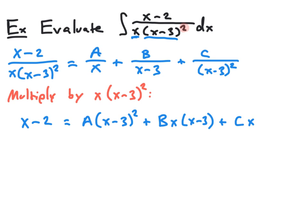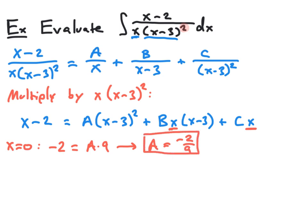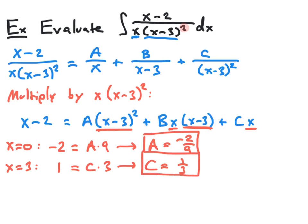We can now do some strategic substitution to solve for some of our variables. If we let x equal 0, on the left-hand side we get negative 2, and we get a times negative 3 squared, which is a times 9. The b and c terms both disappear since they're multiplied by x. So a equals negative 2 ninths. We can also let x equal 3. We get 3 minus 2, which is 1 on the left, and the a and b terms disappear due to the x minus 3 factors, leaving us with c times 3. So c equals 1 third.